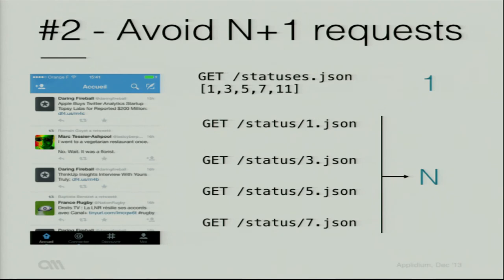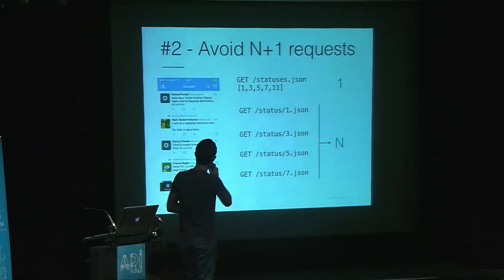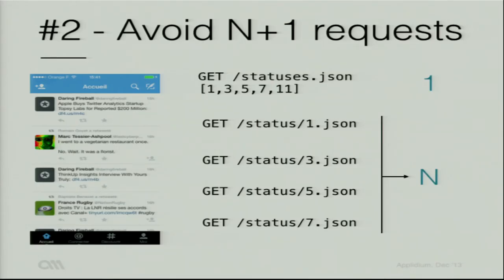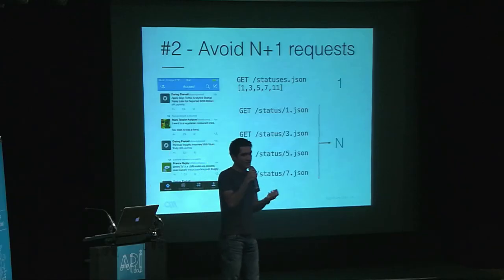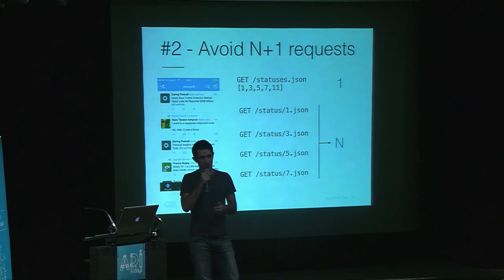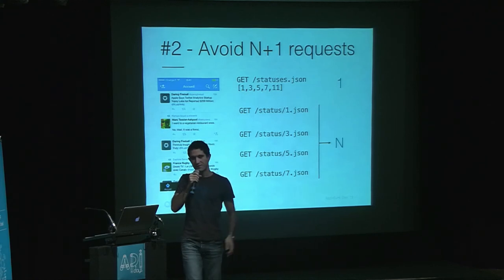The bad case, which unfortunately happens quite a lot, is the top-level API doesn't provide you with everything you need. For example, in the statuses API, you don't get the timestamp of the tweets — you just get the title and content, but no timestamp. So if you want to display how long ago each tweet was posted, you'll have to make one extra request per tweet. If you have five tweets, that's six requests — but imagine a bigger list: instead of one request, you'd end up making maybe 10, 20, or 50 requests.